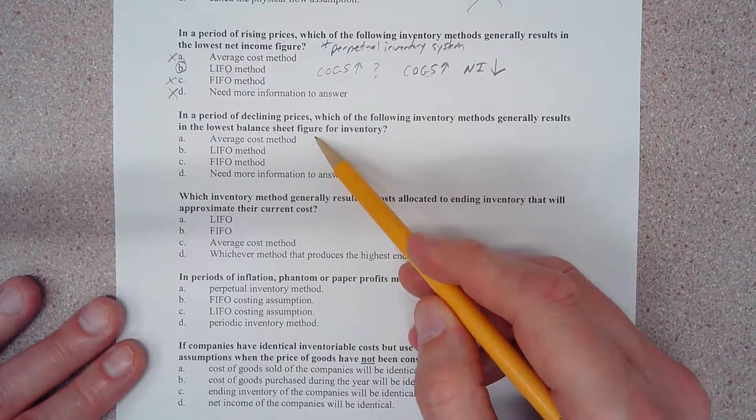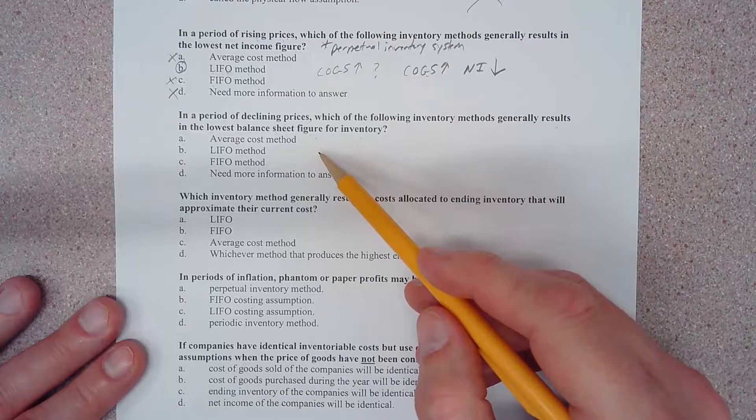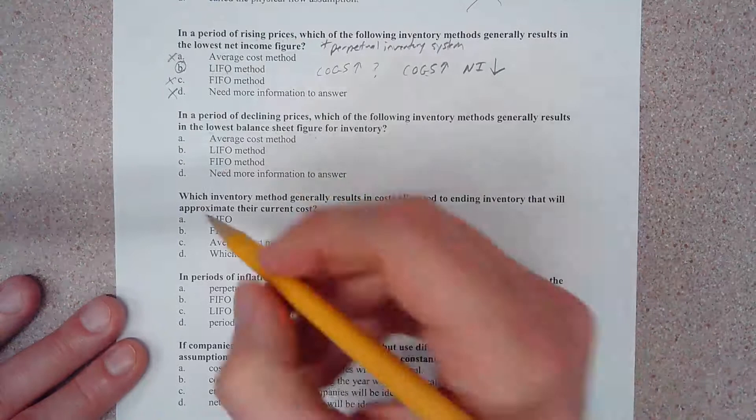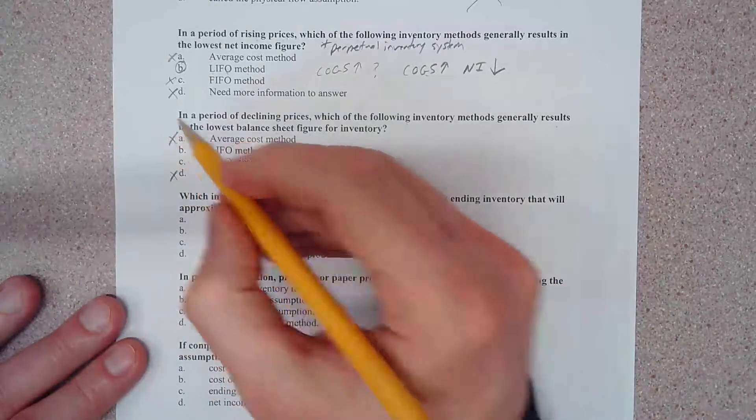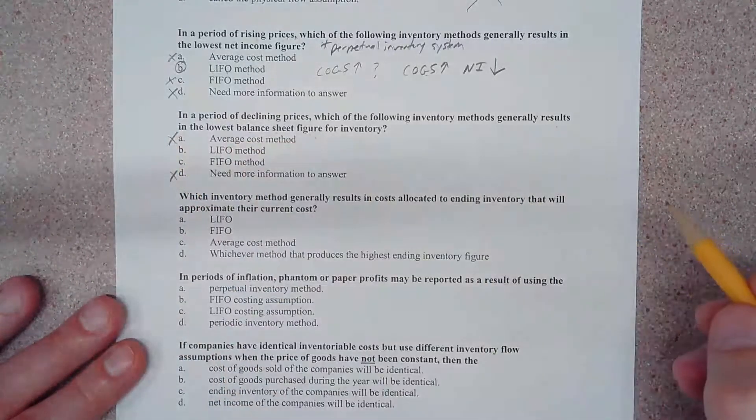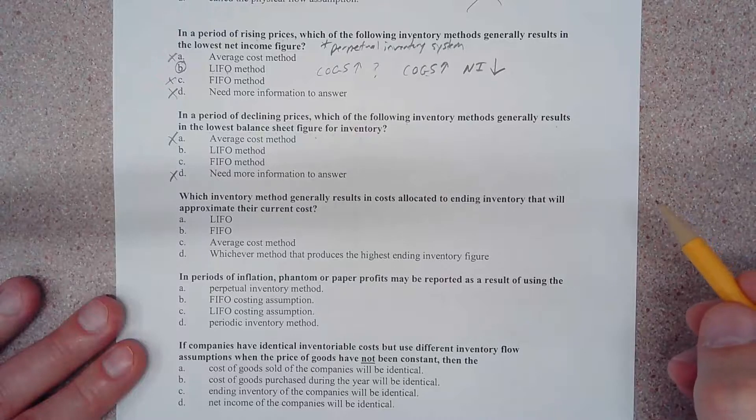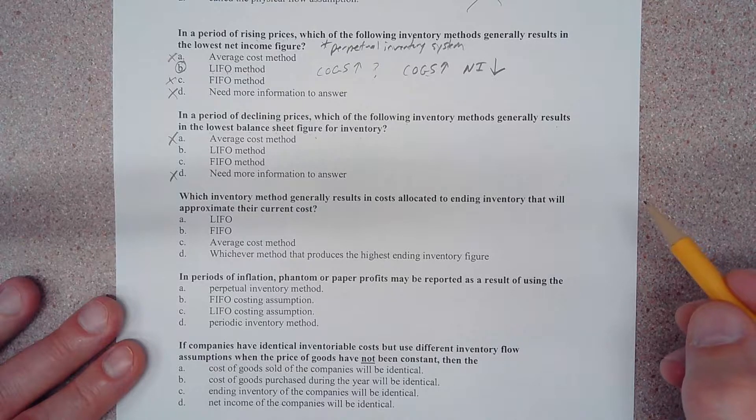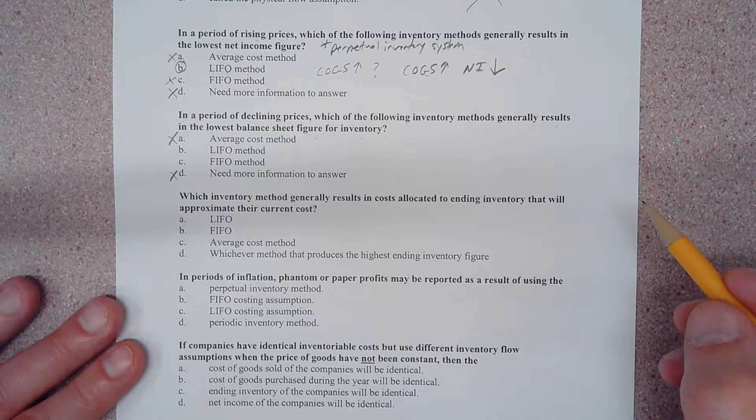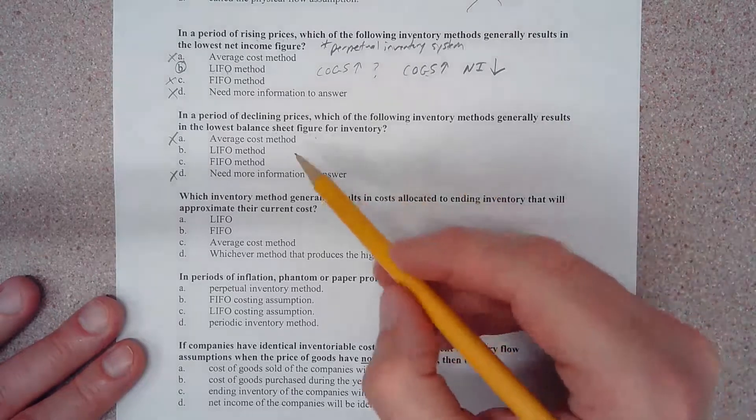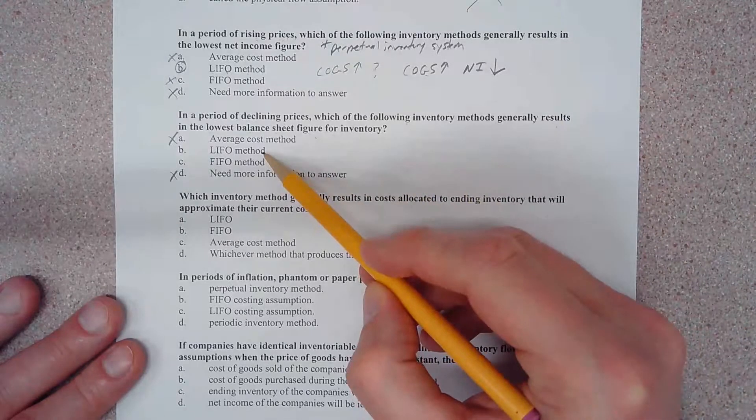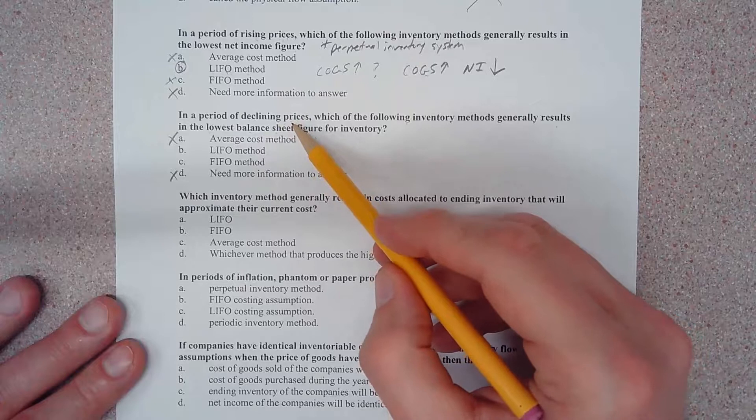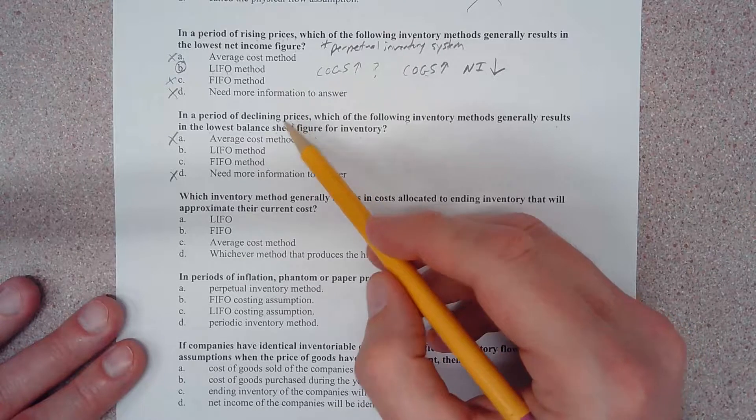So prices are on the decline. We can eliminate choices A and D for the exact same reasons we eliminated them before. Okay, so we still have our two choices of LIFO and FIFO. So let's think about this.